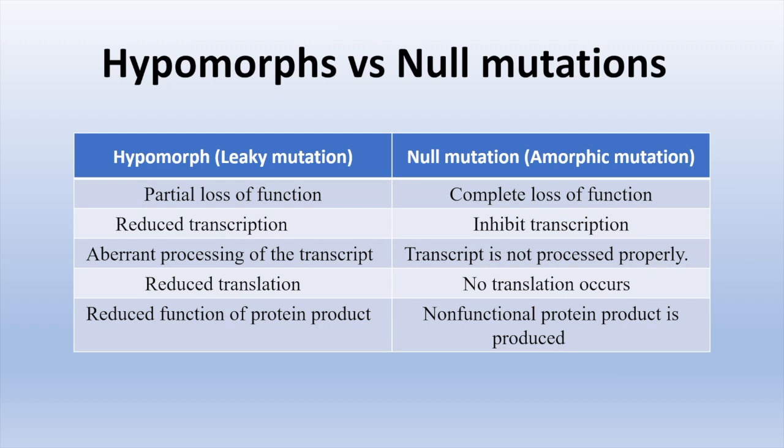Comparing hypomorphs and null mutations: in hypomorphs, we observe partial loss of function of alleles, reduced transcription and translation due to changes in the DNA sequence, improper processing of the transcript which alters protein sequences and functions, and reduced translation — causing a reduction in protein product formation. In null mutations, alleles show complete loss of function, inhibit transcription and translation, and even if transcription and translation takes place, they produce non-functional products or proteins.